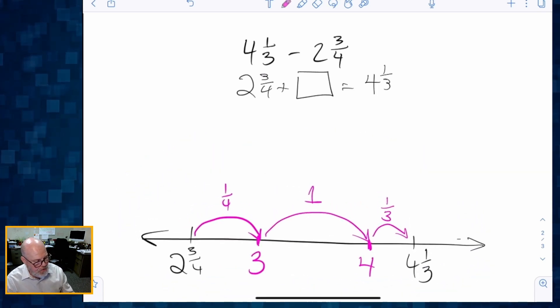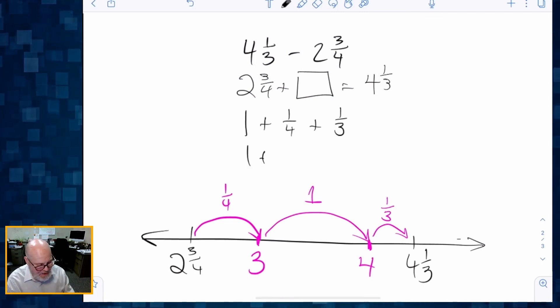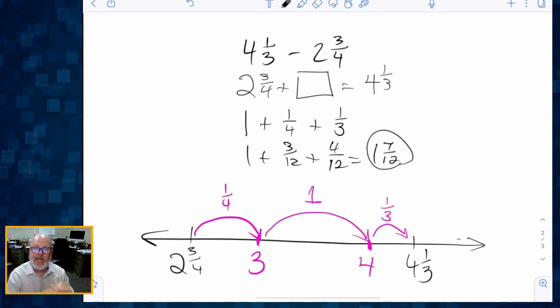All we have to do is add 1 whole + ¼ + ⅓. And we already know how to do that. And so that's 1 + 3/12 + 4/12. And that gives us 1 whole and 7/12 as our answer for that subtraction problem.